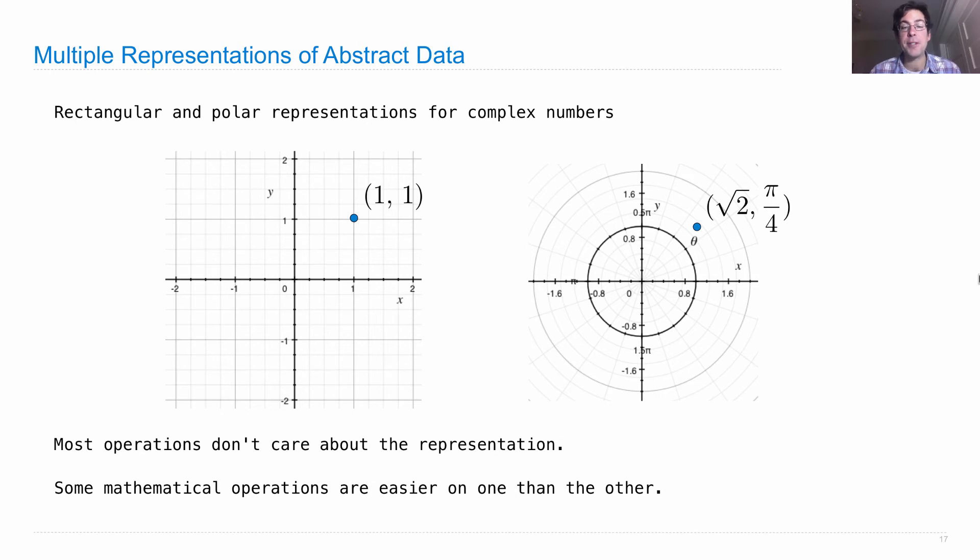But there are some mathematical operations that are much easier on one than the other. So that's why we might want to keep both representations around in the same system as opposed to just trying to commit to one throughout a program.